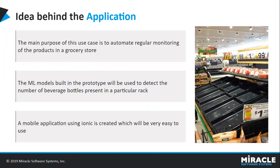The main purpose of this use case is to automate the regular monitoring of products. If there is a device that detects any empty space in the racks, the device notifies the manager that there is empty space and products need to be filled in. This application is built using machine learning technologies. We have built two ML models: one to detect beverage bottles, and another to detect void space — empty space available in the racks — so the store manager or worker can restock. This is integrated into a mobile application.